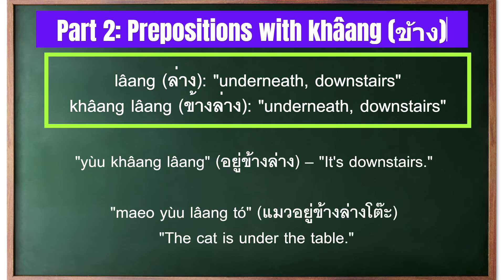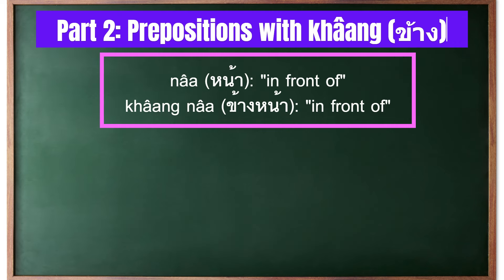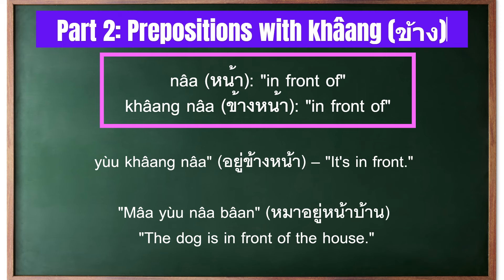ใต้ means 'underneath' or 'downstairs', and ข้างล่าง also means 'underneath' or 'downstairs'. Both can mean underneath or downstairs, but using ข้าง adds more emphasis on the spatial relationship, similar to saying 'by the side of' or 'alongside' in English. For example, 'it's downstairs' is ข้างล่าง, and 'the cat is under the table' is แมวอยู่ใต้โต๊ะ.